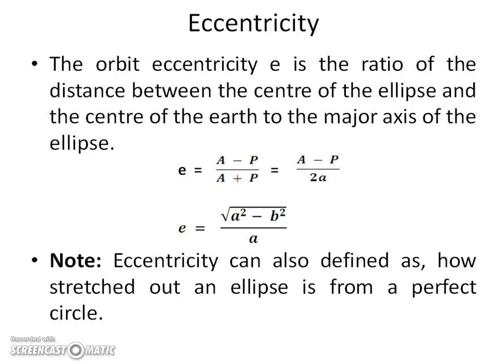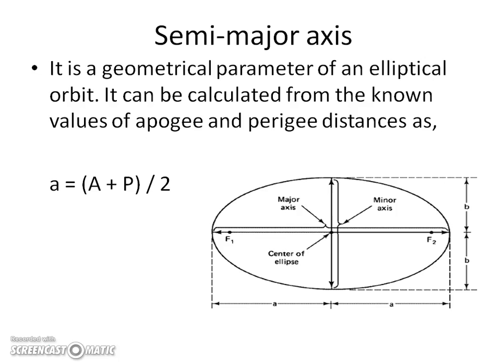Next, eccentricity: orbit eccentricity e is the ratio of the distance between the center of the ellipse and the center of the earth to the major axis of the ellipse. e = (A − P) / (A + P). Since A + P = 2a, this simplifies to e = √(a² − b²) / a. Eccentricity can also be defined as how stretched out an ellipse is from a perfect circle.